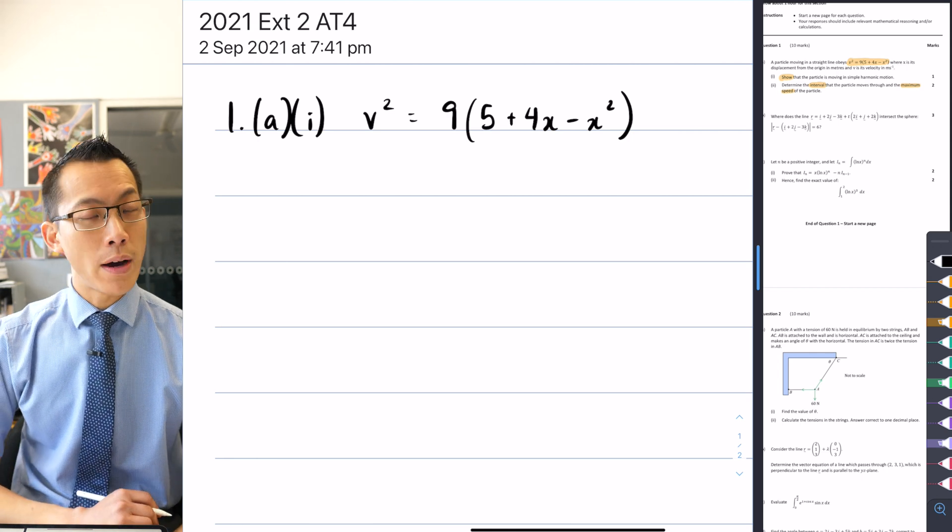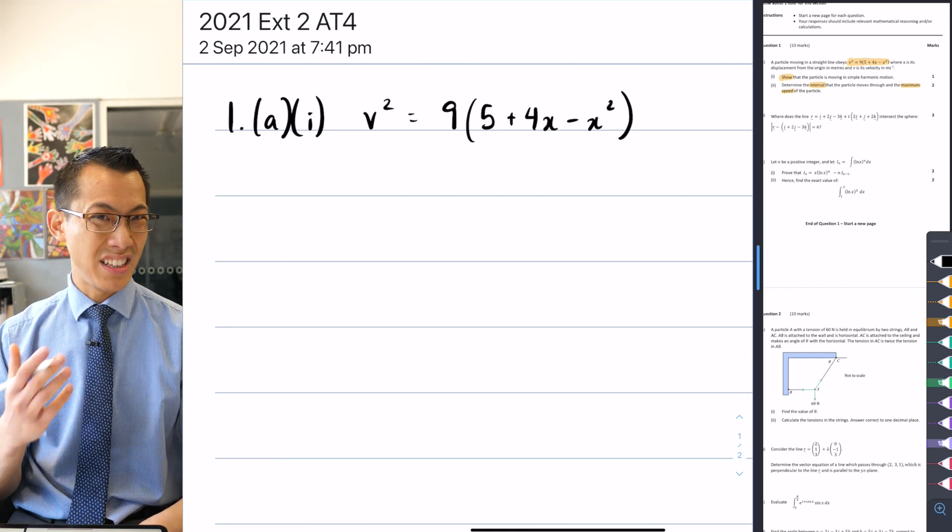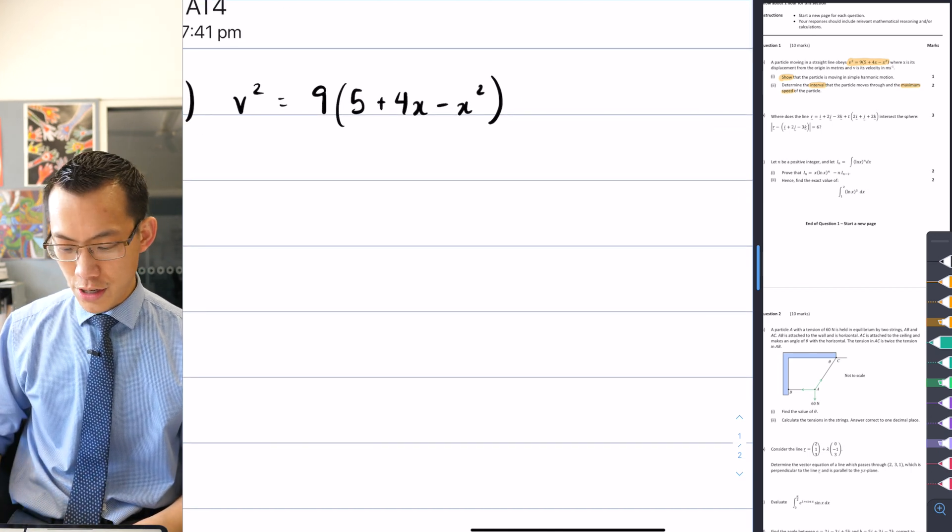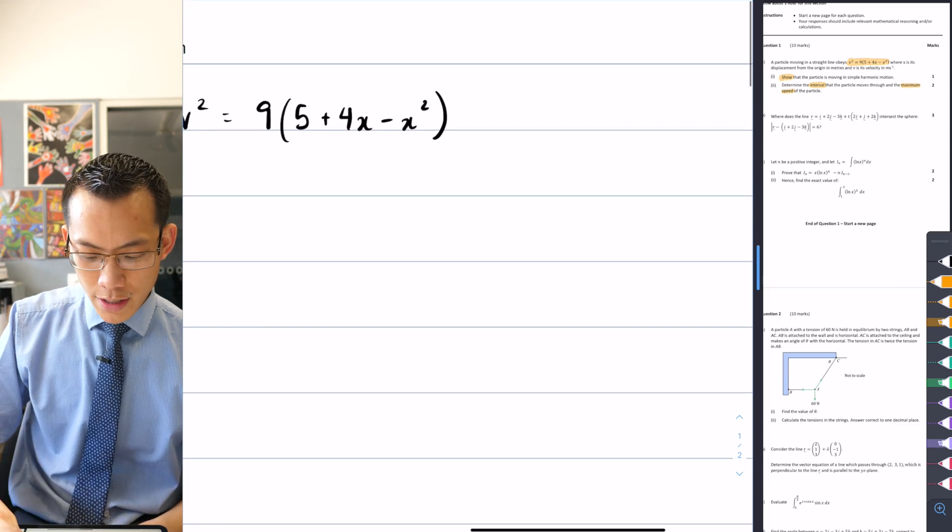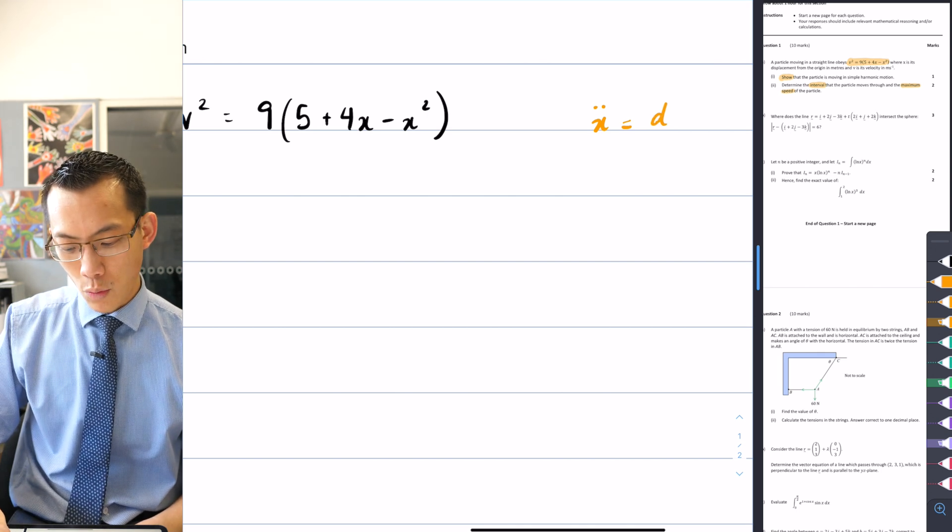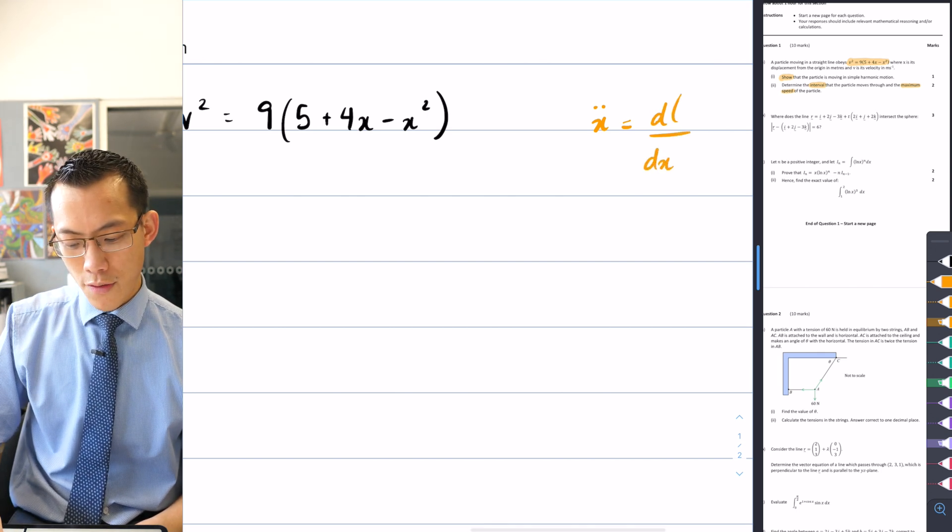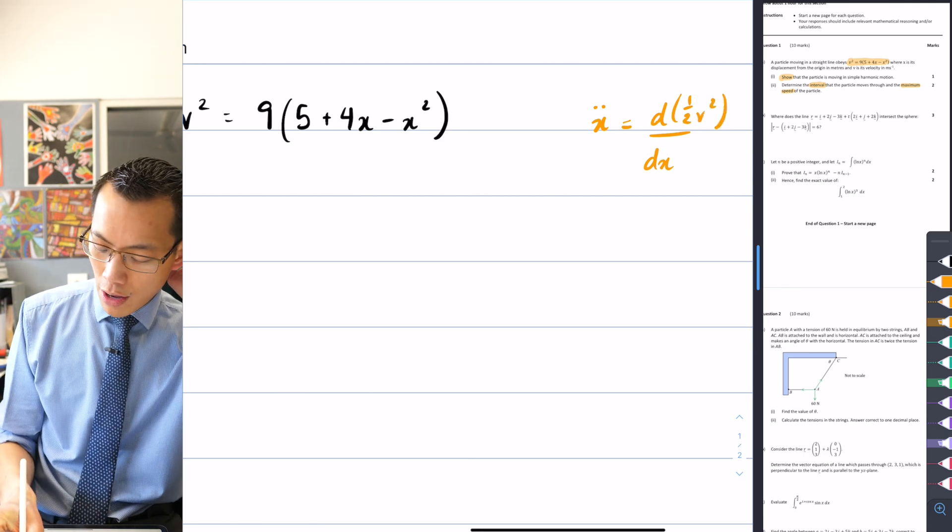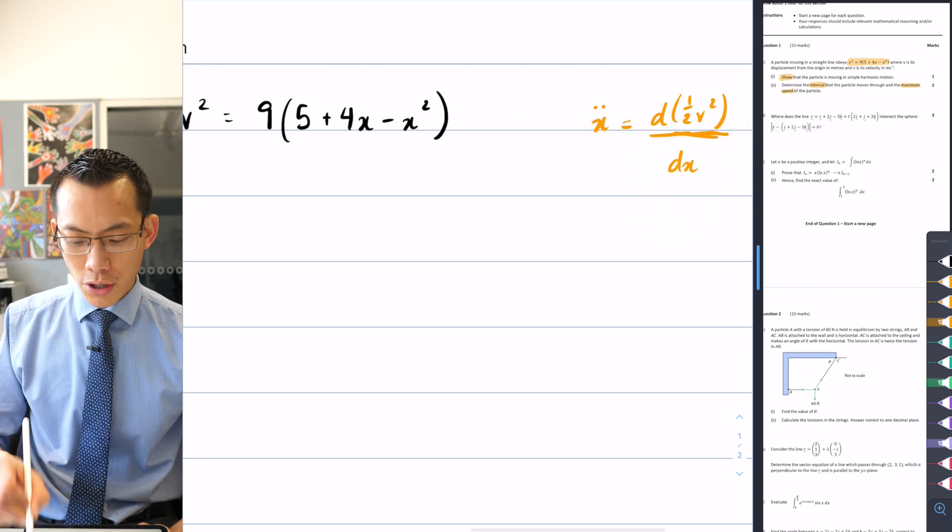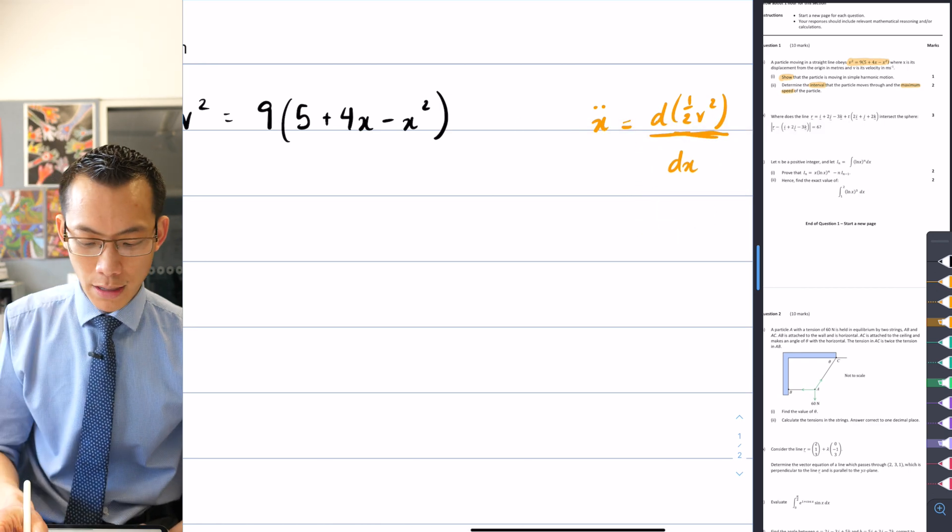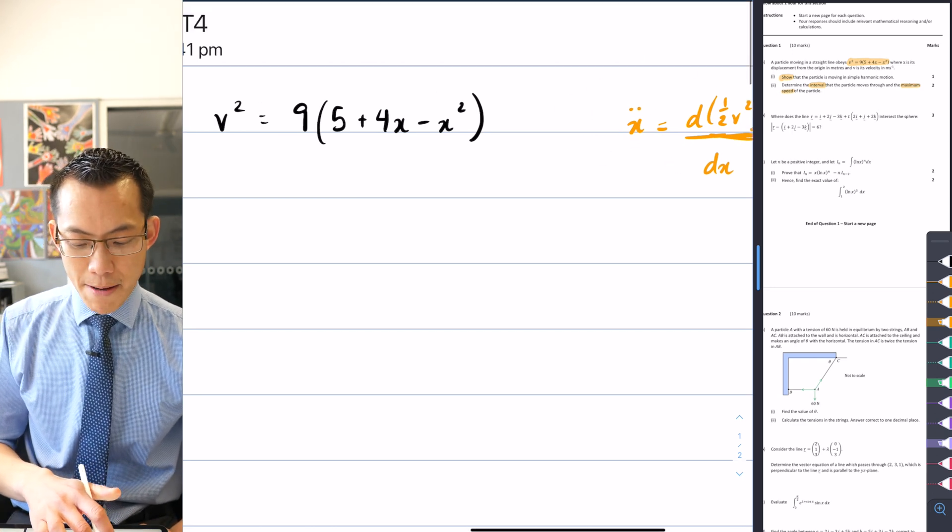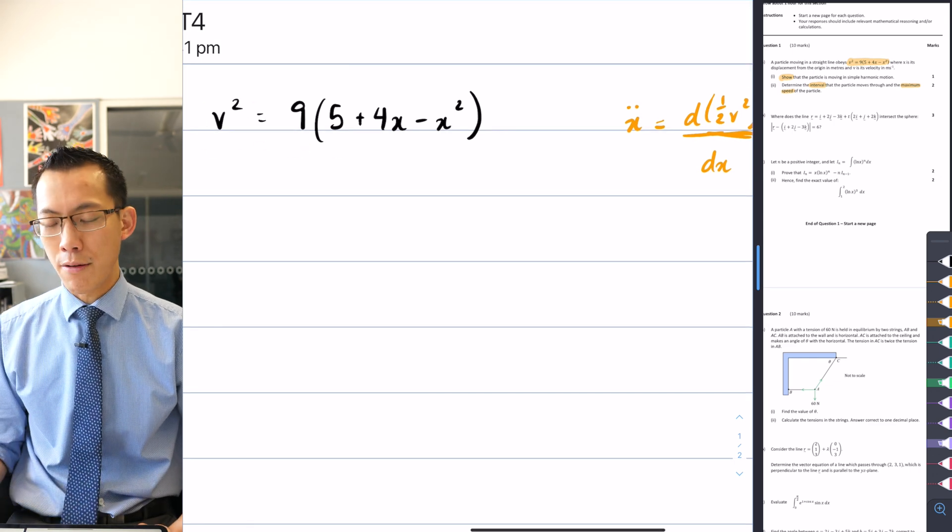Now there are a few different ways to do this, but certainly the most clear and obvious way is to say one of the ways that we can state acceleration, we can say that ẍ can be written as the derivative with respect to x of ½v². This was a result that we got out of a couple of uses of the chain rule, if you remember that result.